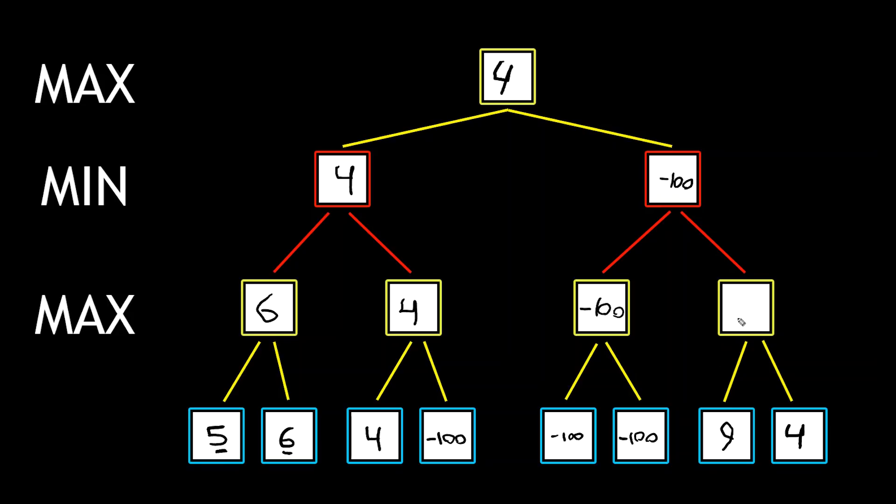You have a nine here, so it picks that, and then it sees that the four is not greater than nine, so this stays nine. However, the minimizer player realizes, oh, I would never pick the right path when I could guarantee a negative 100. So negative 100 stays up here.